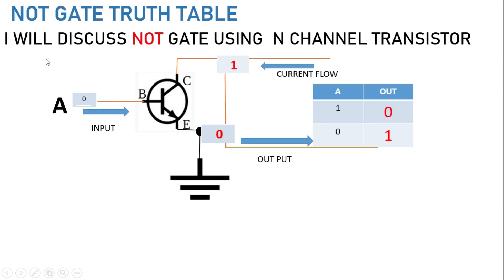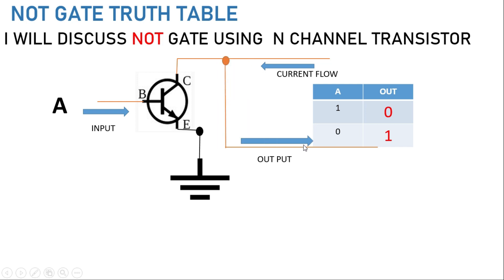Let me explain the NOT gate circuit. This is the supply and this is the current flow — it is directly given to the output. When the base is zero (input is zero), then the output will be high. Now if the input is high, then the transistor conducts and the output is connected to ground — it becomes zero. In case the input is zero, then it won't conduct and the supply is given directly to the output as high. This is the truth table of the NOT gate.